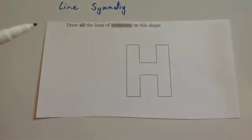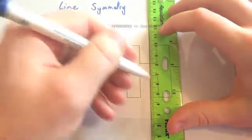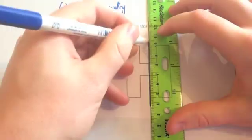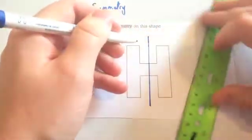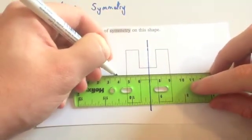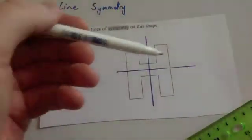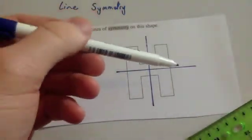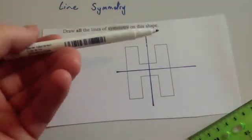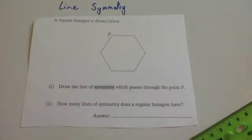Here's another exam question. It says: draw all the lines of symmetry onto this shape. This shape has got two lines of symmetry — one vertical line of symmetry through the middle, and another line of symmetry horizontally through the middle. Because if you were to fold it this way it would go onto itself, and likewise if you were to fold it that way it would go onto itself.